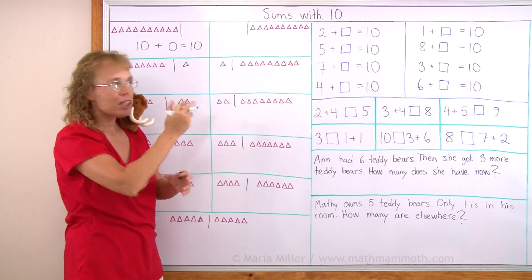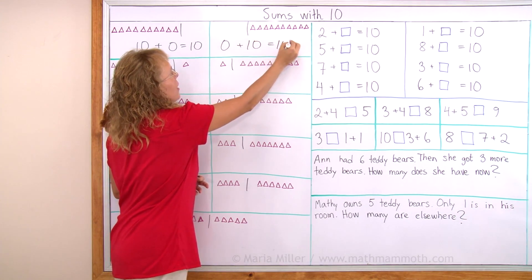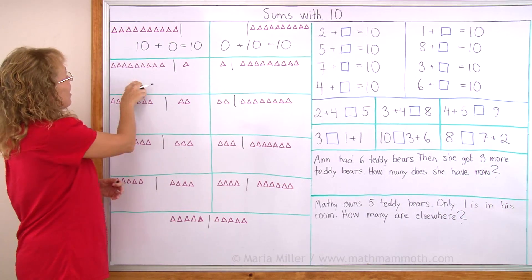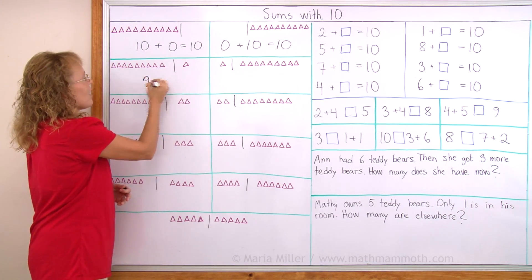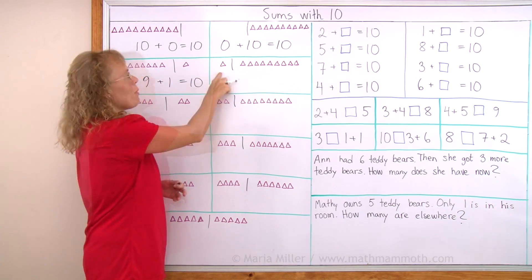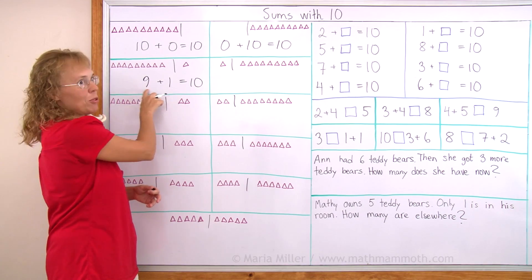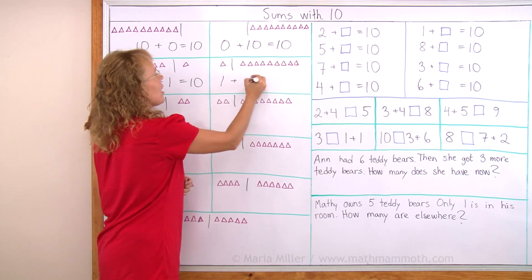On this side the numbers are flipped, so we have 0 plus 10 equals 10. That's easy. Now over here I have 9 on this side and 1 here. So it is 9 plus 1 and that equals 10 too. Over here I have 1 and 9. Just these same two numbers but flipped or switched in their order. 1 plus 9 equals 10.